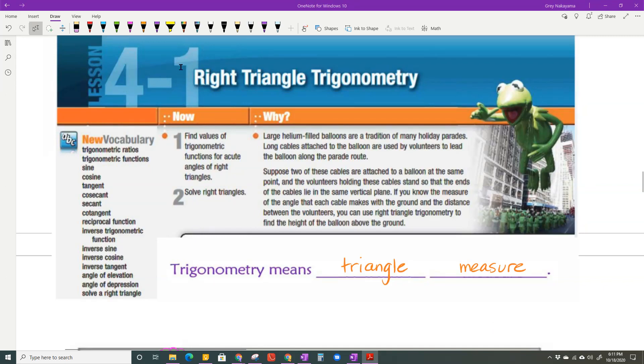This lesson is 4.1b of right triangle trigonometry. We're going to finish up objective 1, and then we're going to talk about what it means to solve a right triangle.